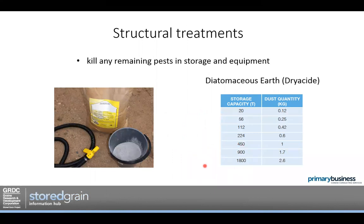For structural treatments, the main product we recommend is diatomaceous earth — a naturally killing, mined product, not chemical-based. Under a microscope it's very abrasive in shape; it scratches the waxy cuticle on the insect and they dehydrate. It's a physical mode of action, so insects can't develop resistance to it. That's why we really like the product — it's effective on all the main grain storage pests. Testing shows that lime is not effective; we need a diatomaceous earth product such as Dryacide, which we've found to be most effective.